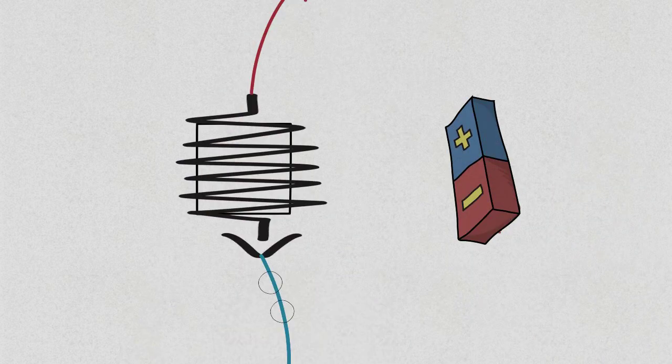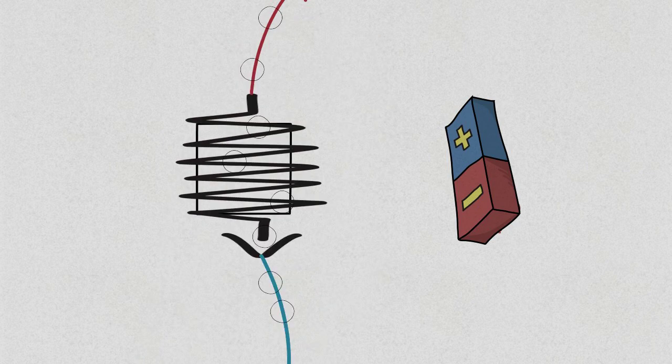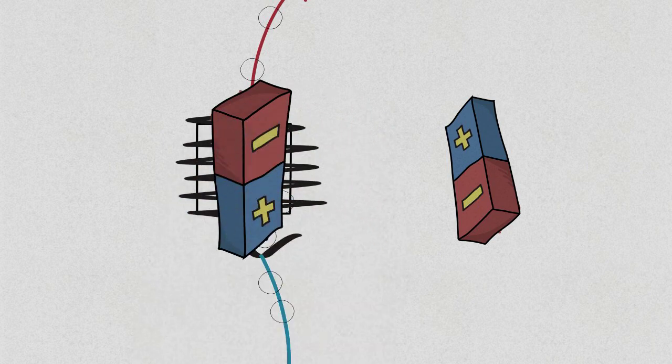If the current was to pass from the blue wire through the coil to the red wire, which is the exact opposite of what happened before, this would create an electromagnet with a magnetic field that is opposite to the one before.